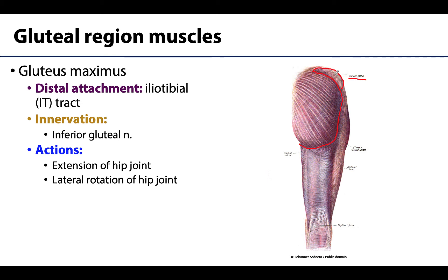The majority of the fibers of the gluteus maximus will insert — or have their distal attachment — on the iliotibial band, located on the lateral portion of the lower limb. We'll talk more about the iliotibial band when we get into muscles of the thigh region. Some of the other muscle fibers will have a more inferior attachment at the gluteal tuberosity of the femur, but since the majority inserts on the iliotibial band, that's what I want you to focus on.